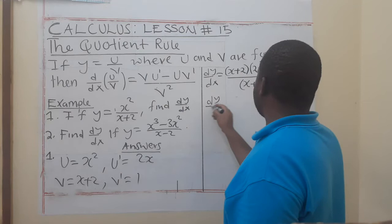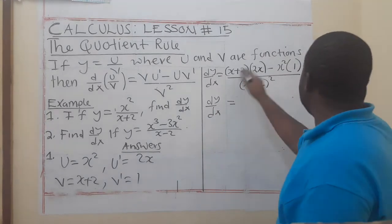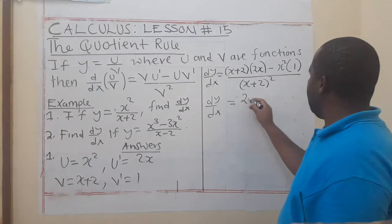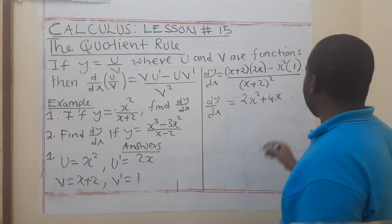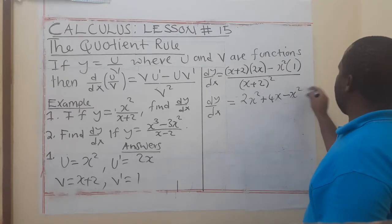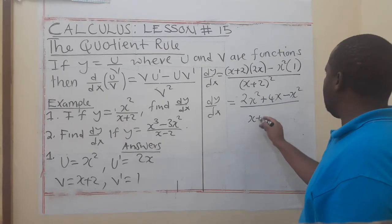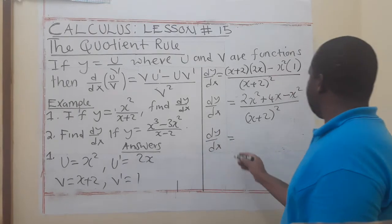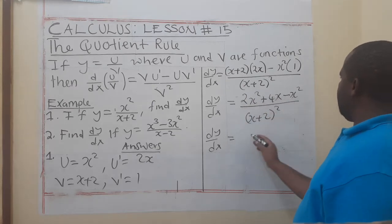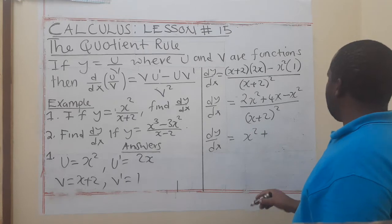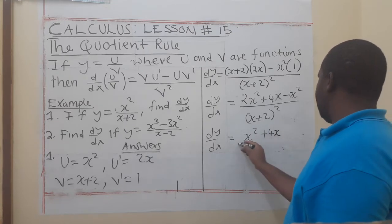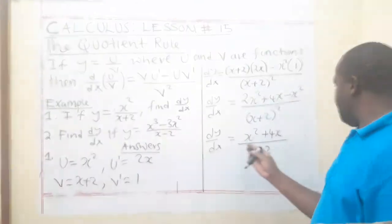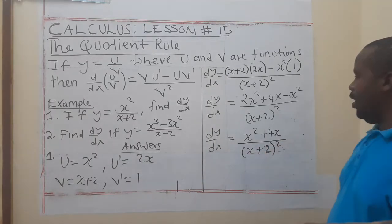So we are saying dy/dx is going to be - multiplying - 2x times x gives 2x squared plus 4x, minus x squared. Everything here is divided by x + 2 to the power 2.